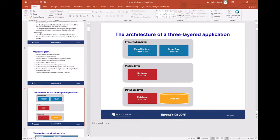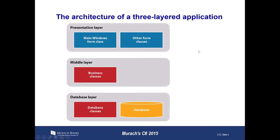This slide represents the architecture of a three-layered application. An application typically has some sort of user interface, as you can see by this first gray box at the top. Our user interface at the moment is typically main Windows Forms classes. We always have some sort of form that inherits from the base form class, and then from there we start building our form with text boxes, labels, buttons, et cetera.